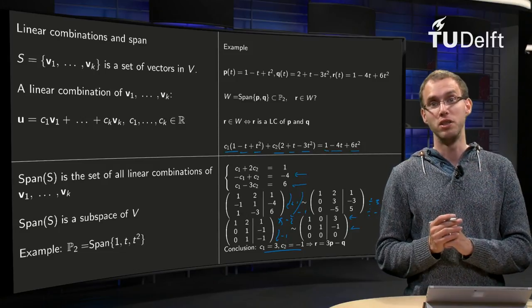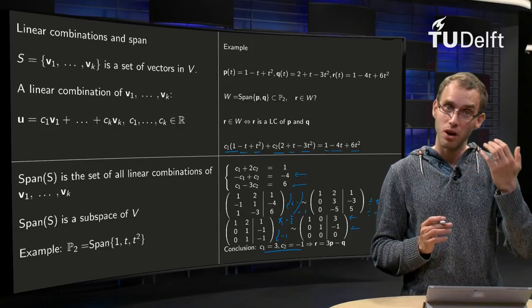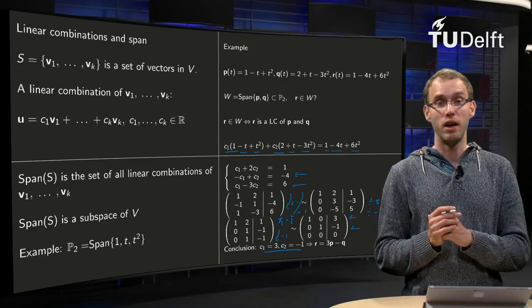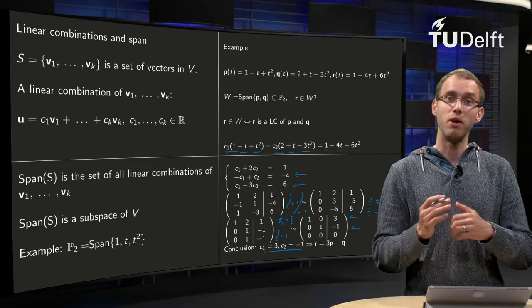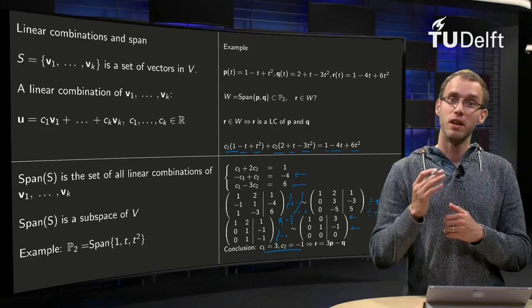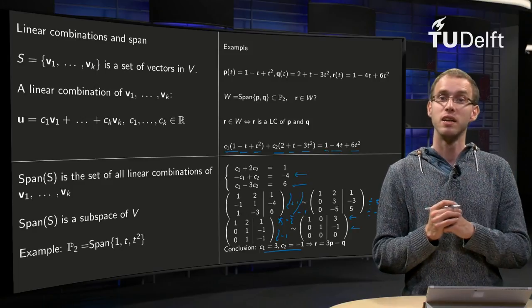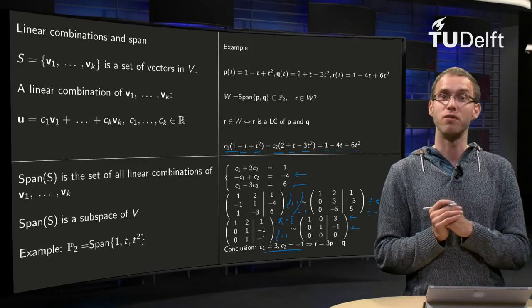So R is a linear combination of P and Q, which means that R is also in W. That is an example of how you can do computations with linear combinations and spans if you have a general vector space.